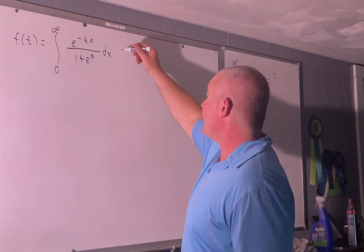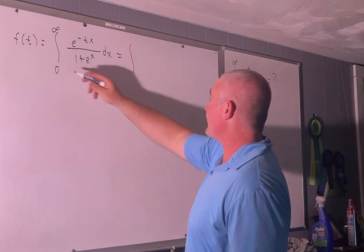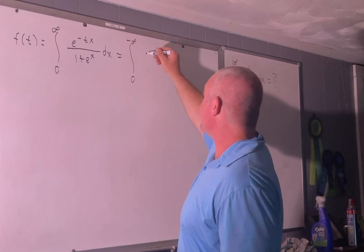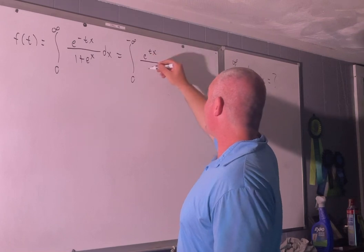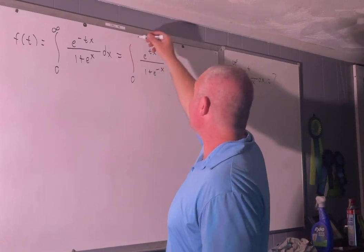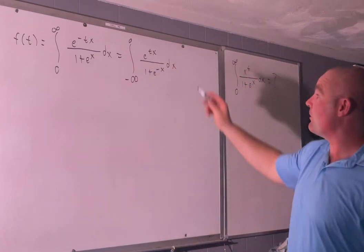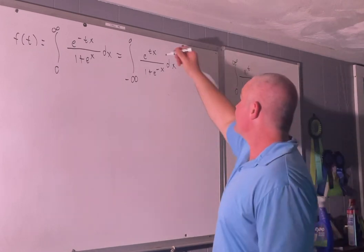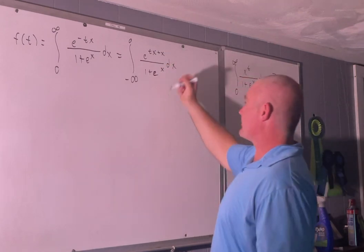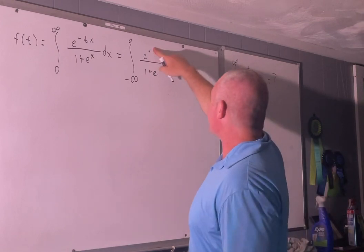We will bring x to negative x. So this will be equal to the integral from 0 to negative infinity of e to the tx over 1 plus e to the negative x times negative dx, and we'll use that negative sign to switch our bounds. Then we'll multiply the top and bottom of this expression by e to the x, which will add x to the exponent there and switch the denominator back to e to the x. Then we'll factor out the x to give us x times t plus 1.